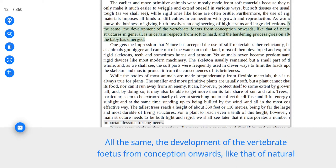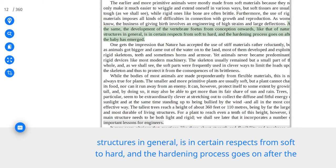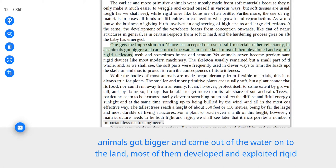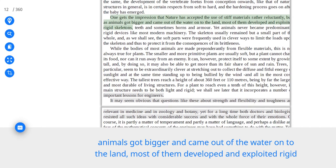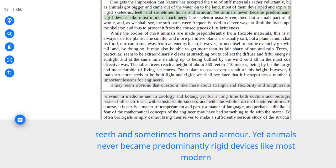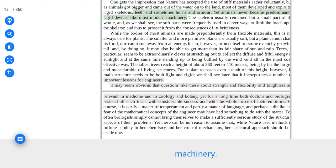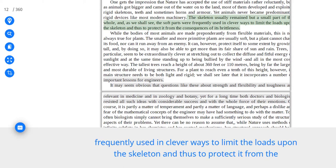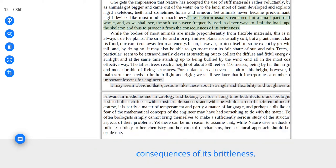All the same, the development of the vertebrate fetus from conception onwards, like that of natural structures in general, is in certain respects from soft to hard, and the hardening process goes on after the baby has emerged. One gets the impression that nature has accepted the use of stiff materials rather reluctantly, but, as animals got bigger and came out of the water onto the land, most of them developed and exploited rigid skeletons, teeth and sometimes horns and armor. Yet animals never became predominantly rigid devices like most modern machinery. The skeleton usually remained but a small part of the whole, and the soft parts were frequently used in clever ways to limit the loads upon the skeleton and thus to protect it from the consequences of its brittleness.